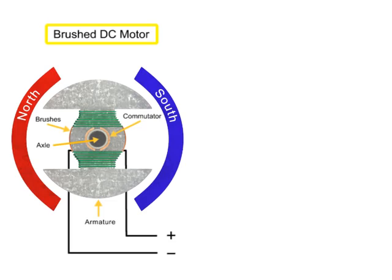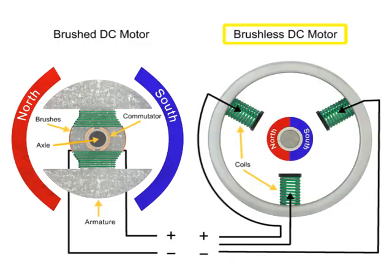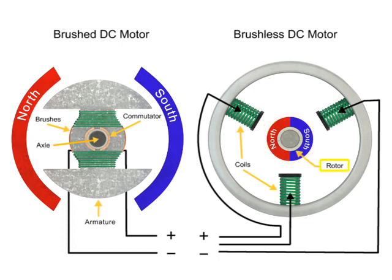Unlike DC brush motors, DC brushless motors do not utilize brushes to control current. Permanent magnets bonded directly to the rotor of the brushless DC motor create rotational motion as current passes through the stator.